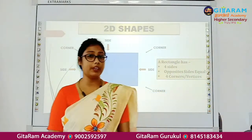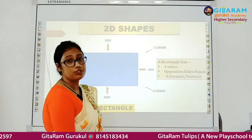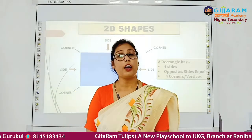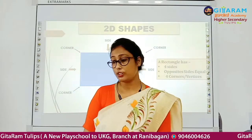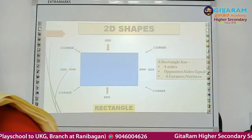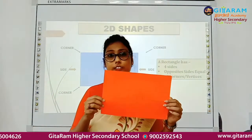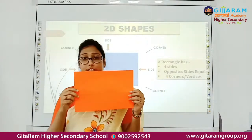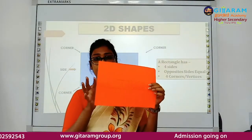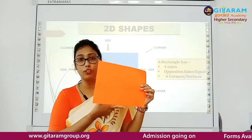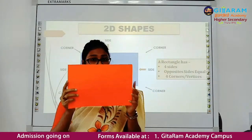Our next 2D shape is rectangle. It also has four sides and four corners or vertices. Students, it is a rectangle. Rectangle has four sides: 1, 2, 3, 4. But opposite sides are equal.